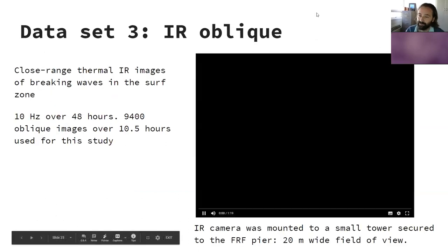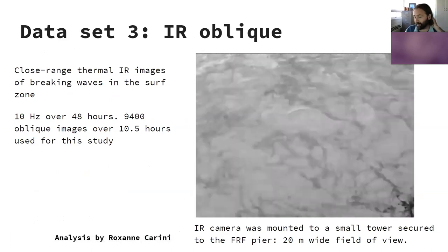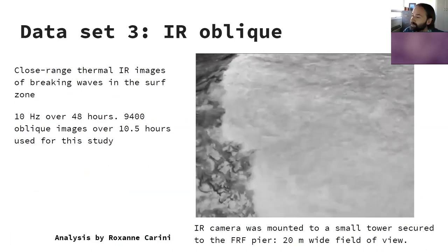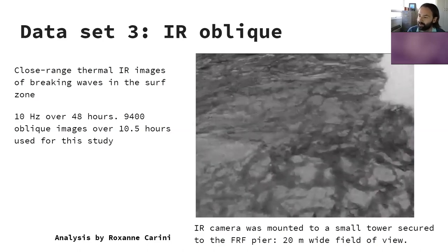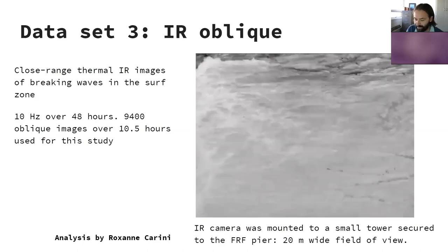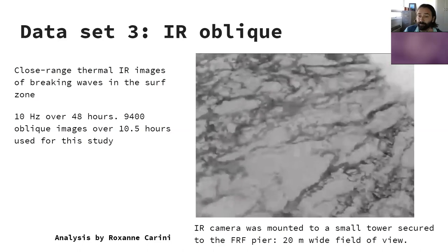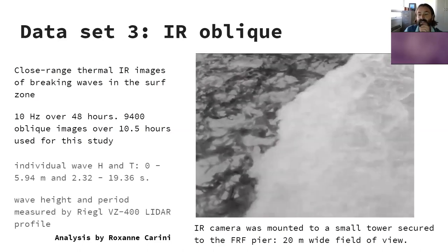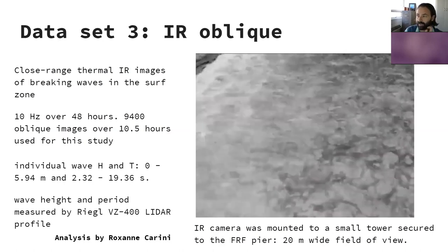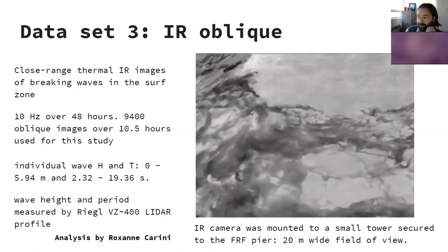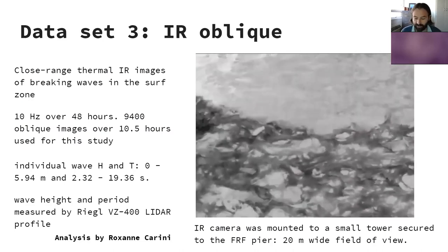The third dataset comes from Roxanne Carini's infrared camera deployment at Duck, North Carolina. The imagery comes from a close-range thermal camera — the relatively light portions of the image are relatively warm — and there's a great textural signature of the sea surface associated with different ranges of wave energy. This dataset came from just two days during a storm that hit Duck: about a thousand oblique images over 10 and a half hours were used. A lidar that intersected the field of view was used, and in her PhD Roxanne Carini developed a semi-automated method to estimate individual wave height and period from each wave. The ranges are therefore very large because we're looking at individual waves, not a statistical quantity.